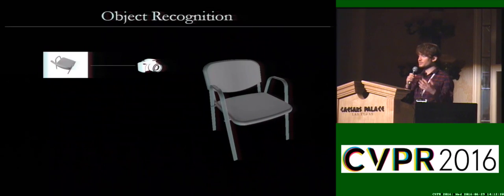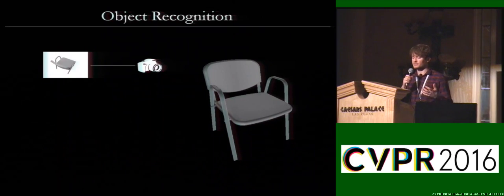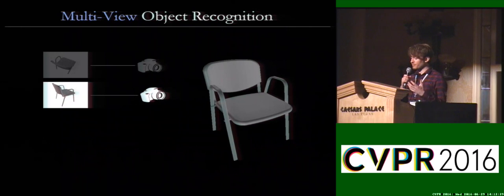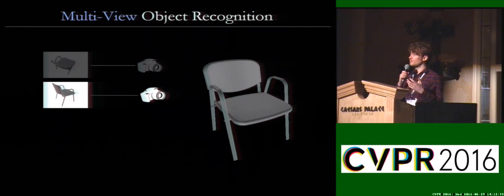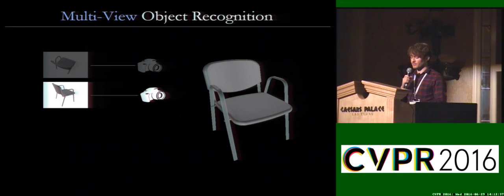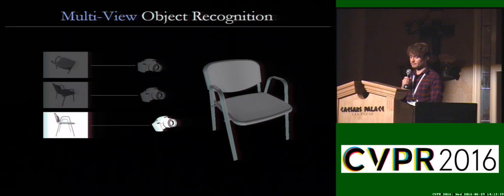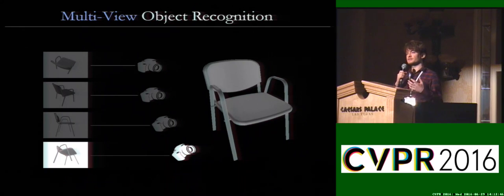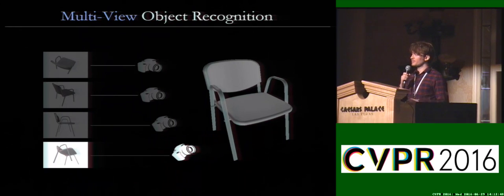Object recognition is typically the task of recognizing an object based on a single image. I work in a robotics lab, so I'm used to dealing with image sequences from a moving camera. Therefore, the problem becomes that of multi-view object recognition — given a sequence of images, I want to recognize the object by taking advantage of this rich extra amount of data from these observed images.